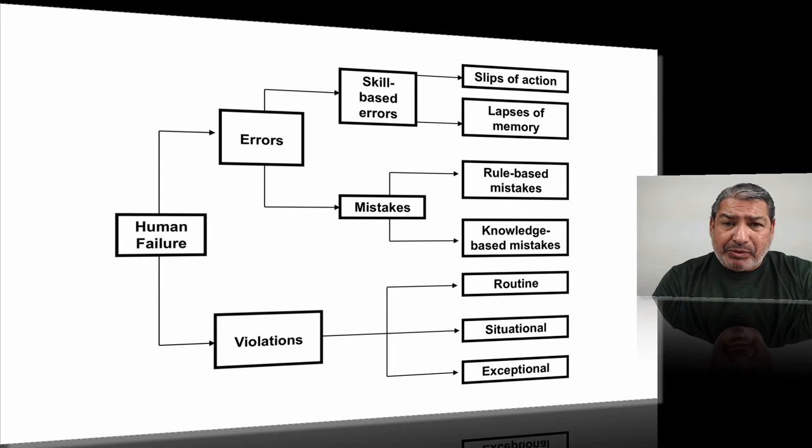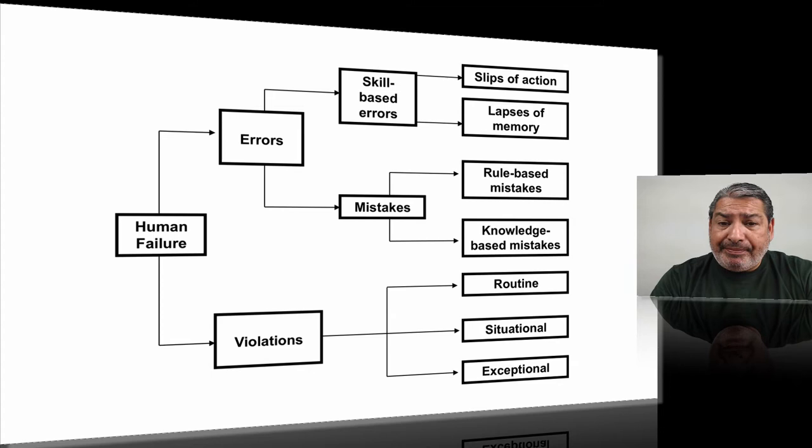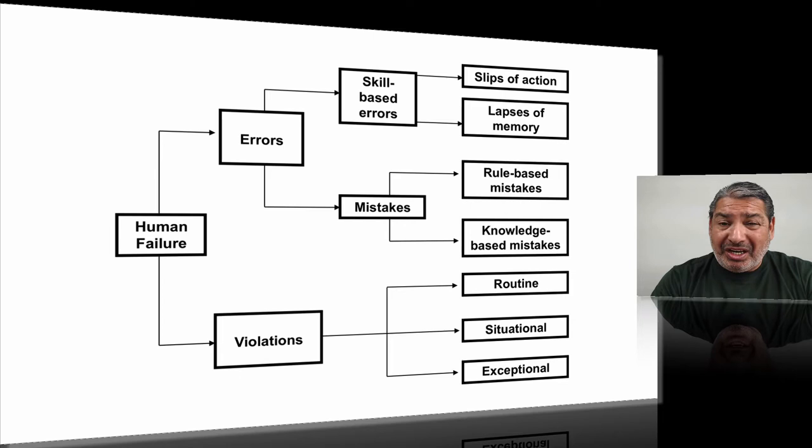When someone says 'it was your fault, you didn't do it properly,' I tend to look for the underpinning reasons why. Looking along the top line, it may be that that person made an error — we can then define whether it's a skill-based error or whether it was a mistake. At the bottom we look at violations, whether they're routine, situational, or exceptional. I'm going to go through each one of these in detail, and this will help you set apart from your competition.